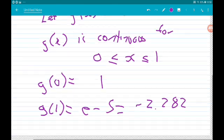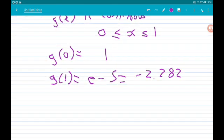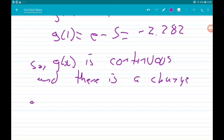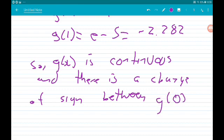So for the change of sign, we should say: g(x) is continuous, and there is a change of sign between g(0) and g(1).